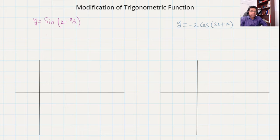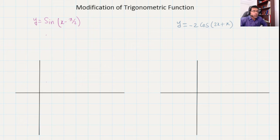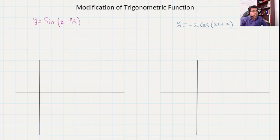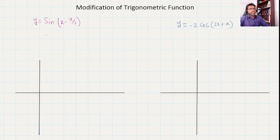Welcome to MathSoul. In this video we are going to see the modification of trigonometric functions, particularly when we are making the phase change. We have two examples: y equal to sine of x minus pi over 2, and another one with cosine where y equal to minus 2 cos of 2x plus pi. You can see the difference.